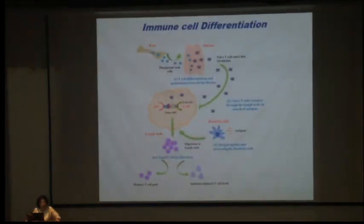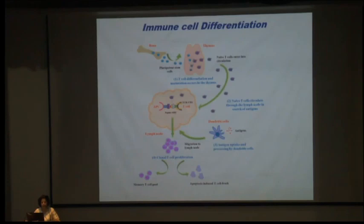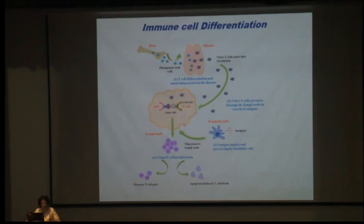Just touching upon immunity and the immune response from the beginning so we all understand well. From the bone marrow there are pluripotent stem cells; they go to the thymus where immunity matures. Naive T cells egress from the thymus, go to the lymph node where they interact with antigens displayed by dendritic cells and APCs. These naive T cells then mature and come back to the periphery, and there is clonal T cell proliferation.